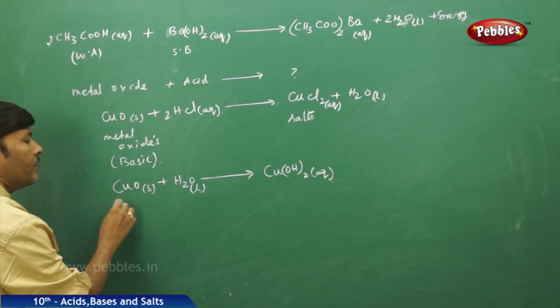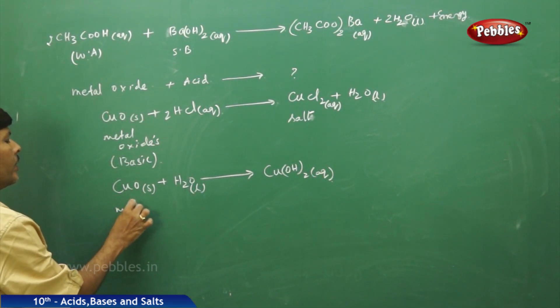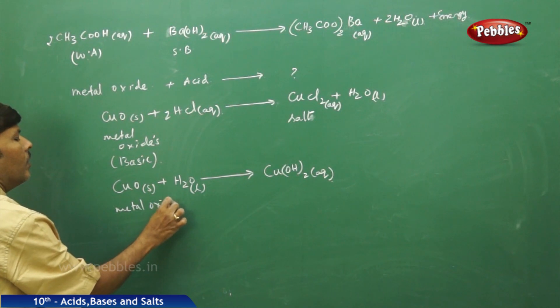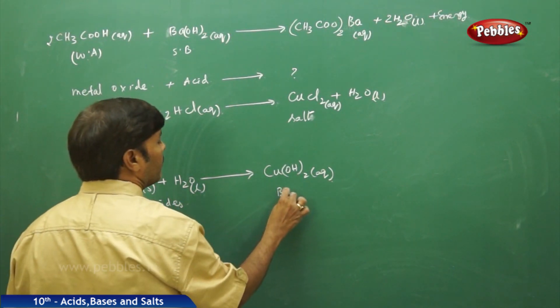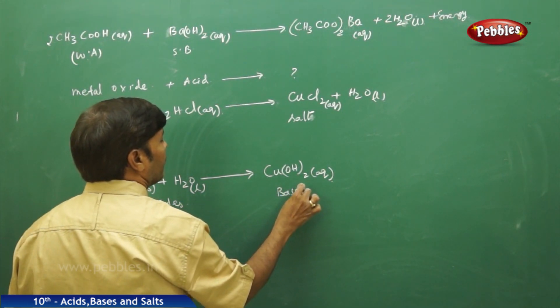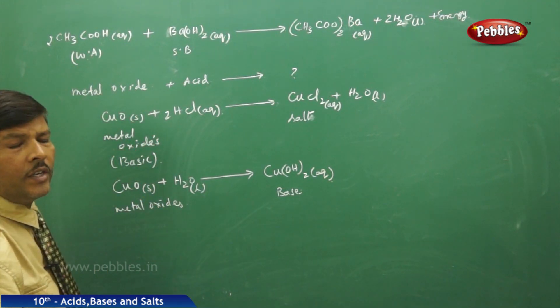So from this equation, it is very clearly understood that all metal oxides, all metal oxides, they are bases. Metal oxides are basic in nature.